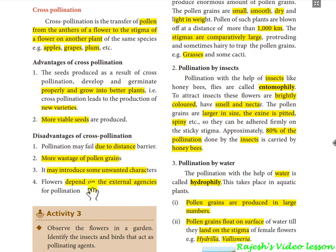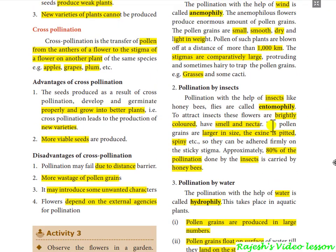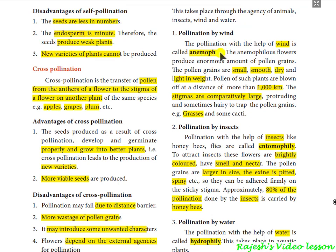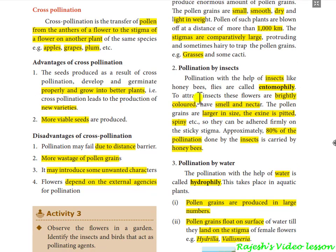Cross-pollination is facilitated by external agencies. The first is anemophily — pollination by means of wind. For wind pollination, pollen should be small, smooth, dry, and lightweight. Comparatively, the stigma should be big enough to catch pollen, and pollen should be produced in large numbers. Examples include grasses and cannabis.